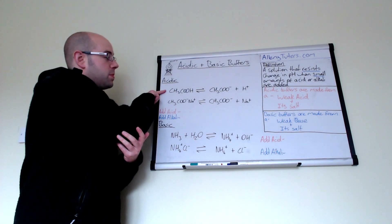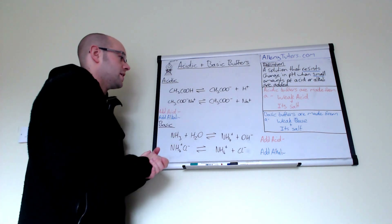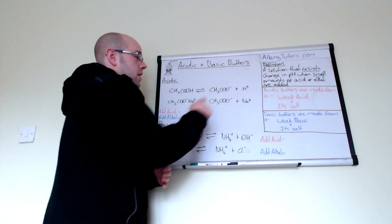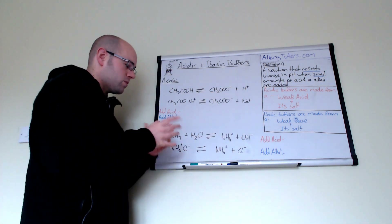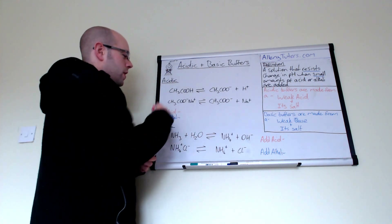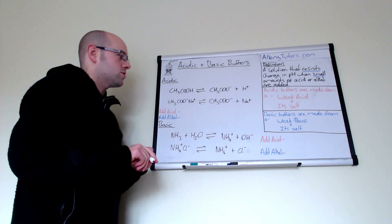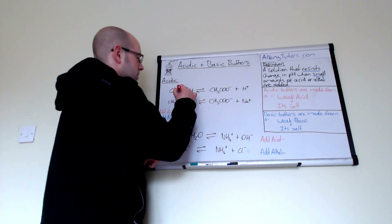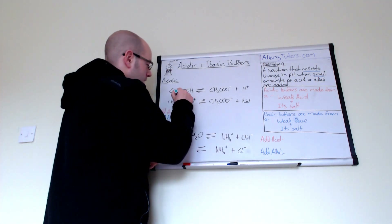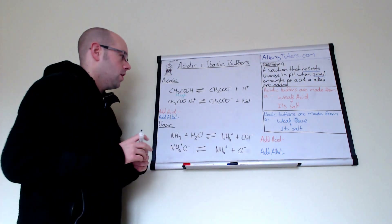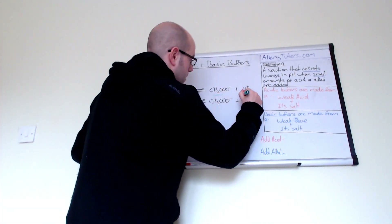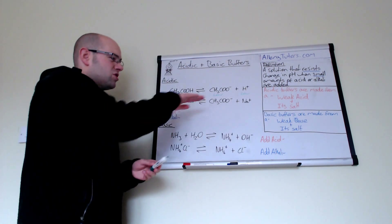Remember the definition: it's a weak acid and its salt, and we've got two equations showing that. The weak acid equation is up here — this is ethanoic acid, and ethanoic acid will dissociate to form ethanoate ions and H+ ions. Because this is a weak acid it dissociates very poorly, so it doesn't break up into its ions very readily. In terms of concentrations, we have a high concentration of ethanoic acid and low amounts of ethanoate and a low amount of H+.